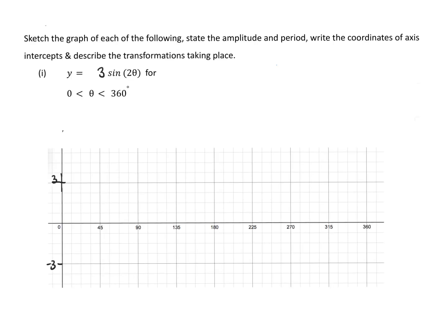Let's graph 3 sine of 2x. First, we write down the amplitude. What's the amplitude for this one? Three. Good — so it's going to peak up to 3 and down to negative 3. When sketching, once you've got your amplitude, get your pencil and draw a faint line along those — I've gone 3 and negative 3 — just so I know I'm going to go up to there and down to that.